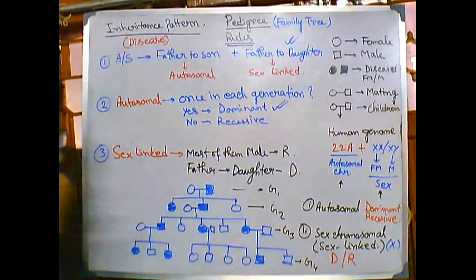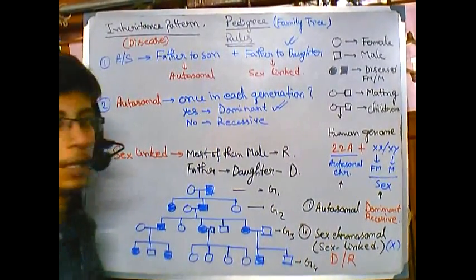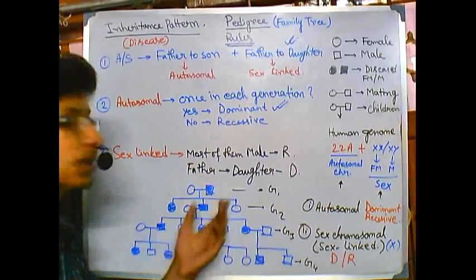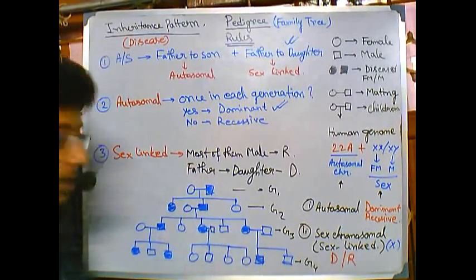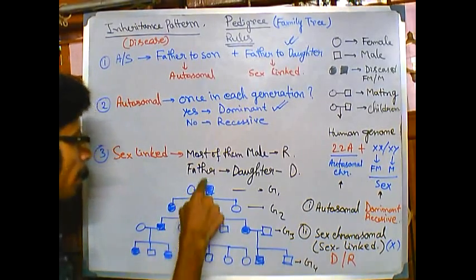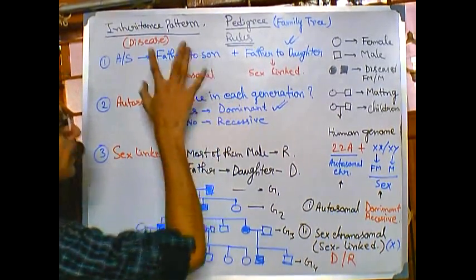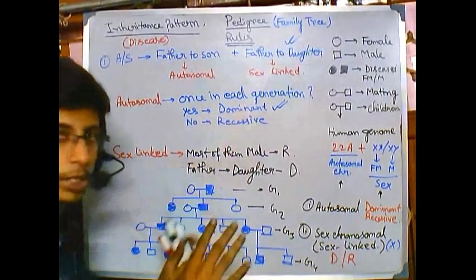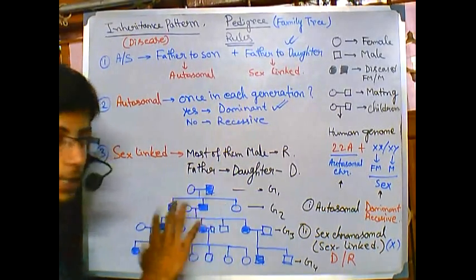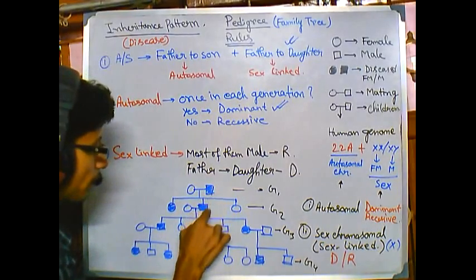Now what we are looking at here, again we will question this pedigree and based on the answers we will be deriving our results, our conclusions. Now in this case, whatever we are seeing, the inheritance pattern - first father to son or father to daughter, you need to check that. And here, the inheritance pattern for this disease, which is a skin disease in this case, is coming from father to son and father to daughter also.